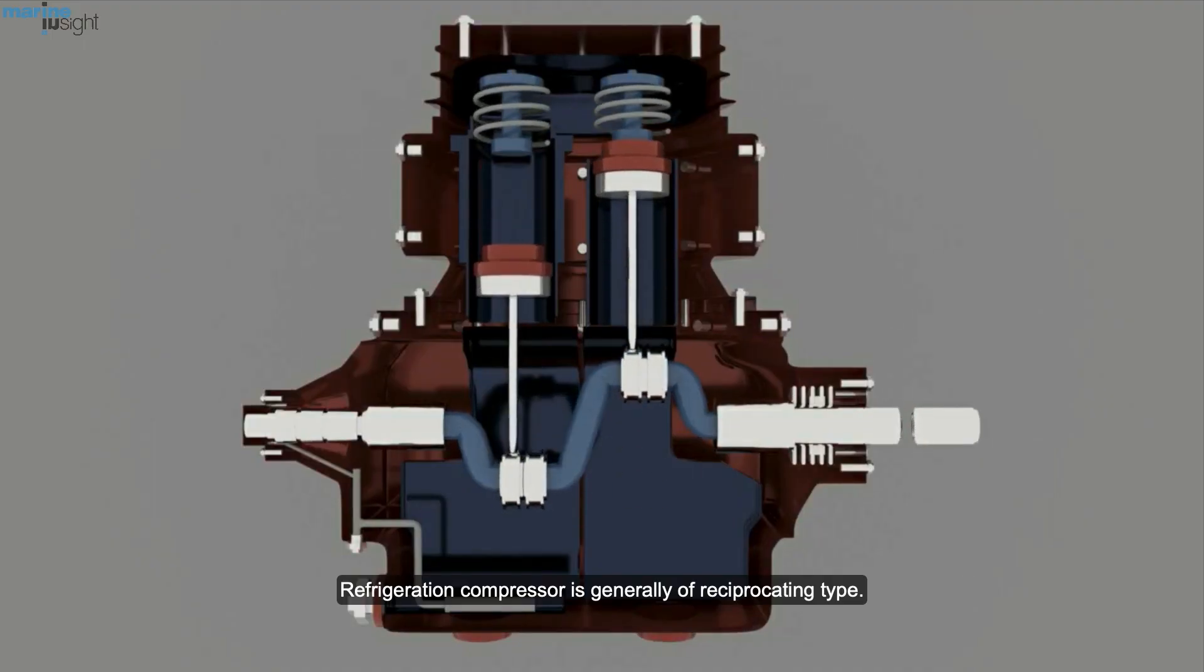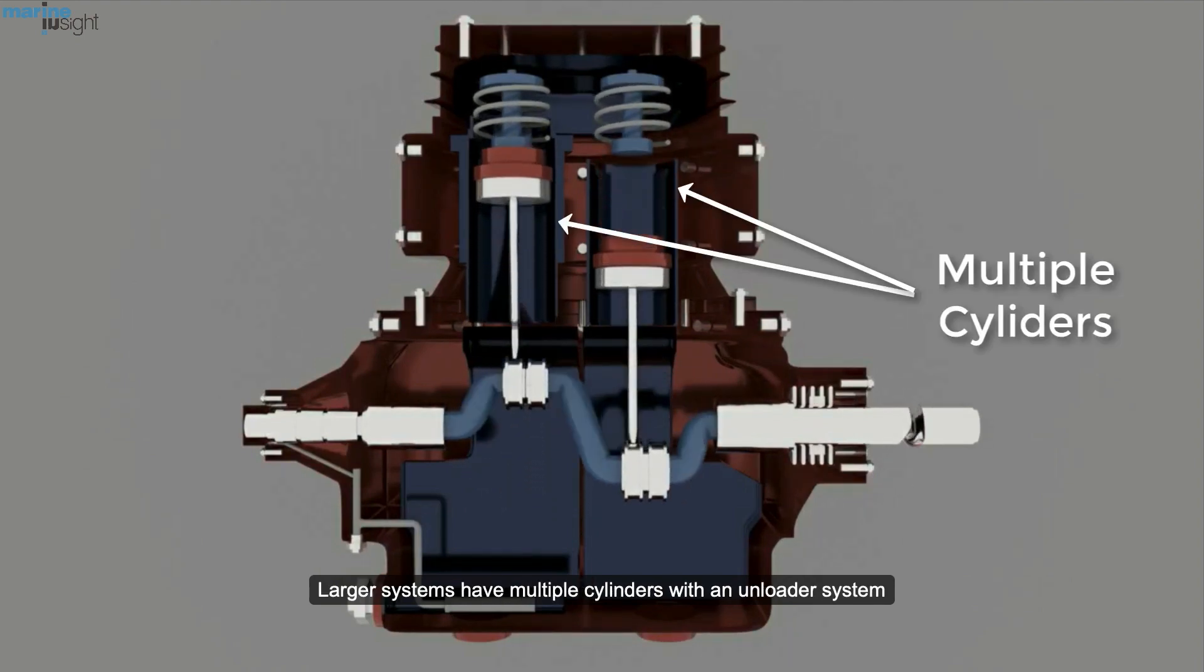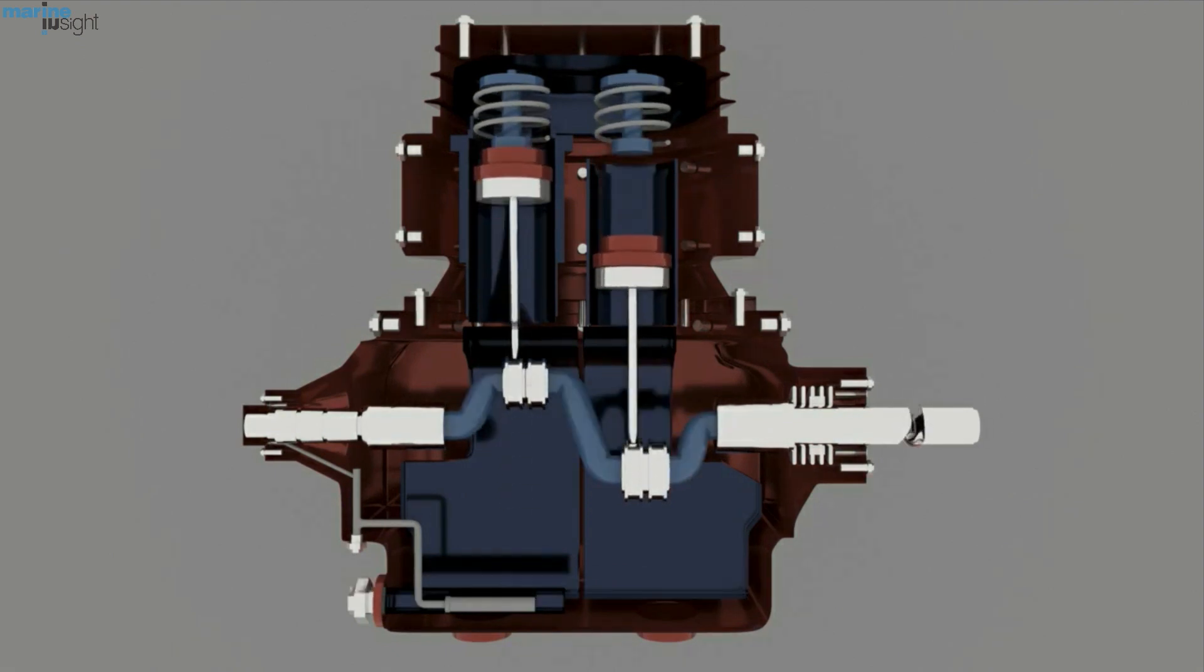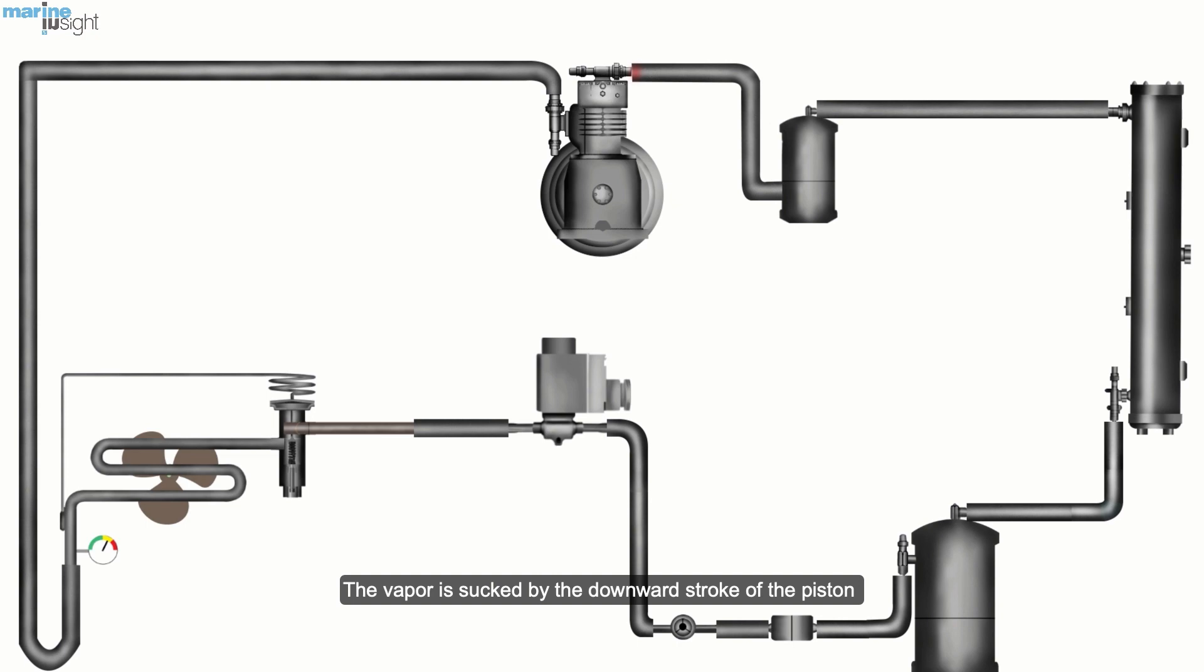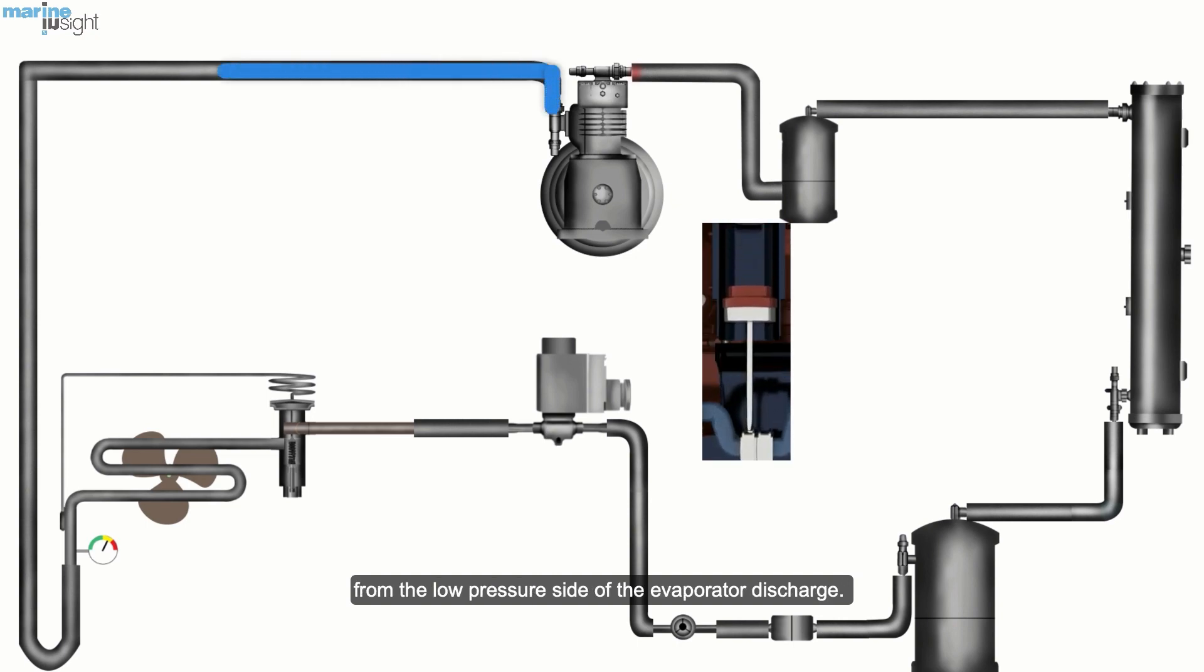Refrigeration compressor is generally a reciprocating type. Larger systems have multiple cylinders with an unloader system using the suction pressure as its signal. The vapor is sucked by the downward stroke of the piston from the low pressure side of the evaporator discharge.